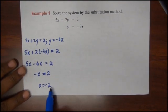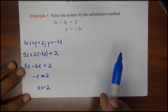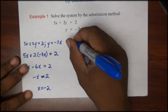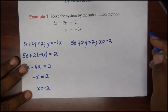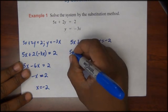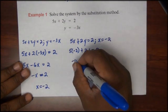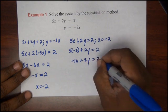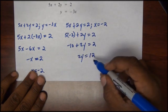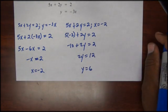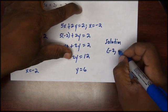Now to find our other variable y, we'll take this x equals negative 2 result and substitute it into one of our original equations. I'll choose the first equation: 5x plus 2y is equal to 2. We substitute x for negative 2, so 5 times negative 2 is negative 10, plus 2y is equal to 2. I'll add 10 to both sides: 2y is equal to 12. Dividing both sides by 2, therefore y is equal to 6. So our ordered pair solution is negative 2 and 6.